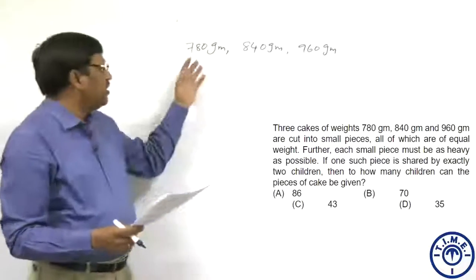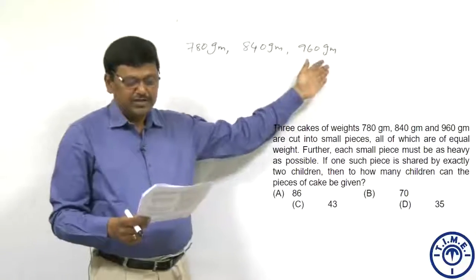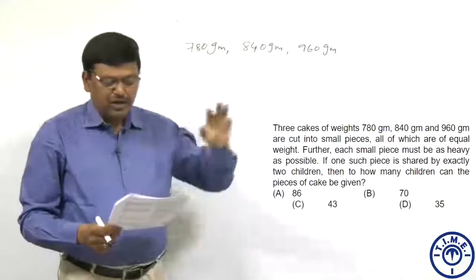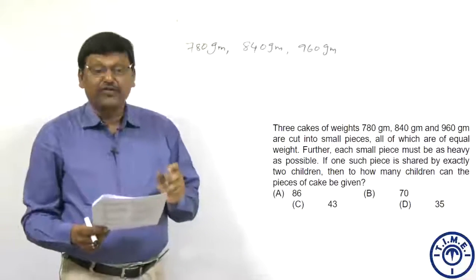Three cakes of weights 780 grams, 840 grams and 960 grams are cut into small pieces, all of which are of equal weight.